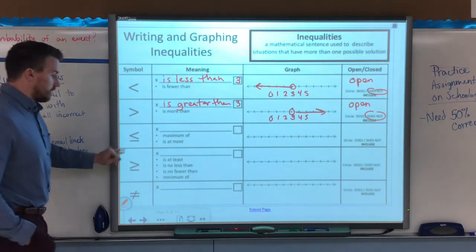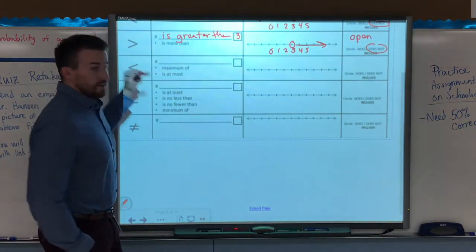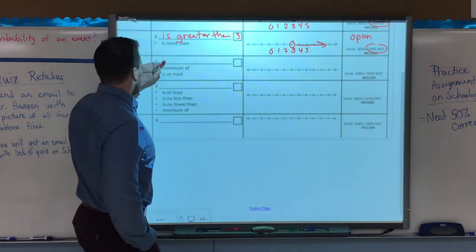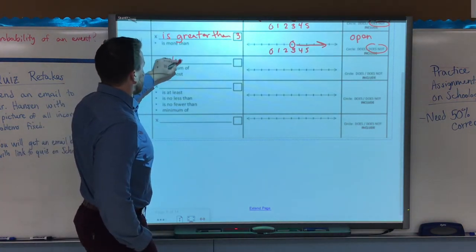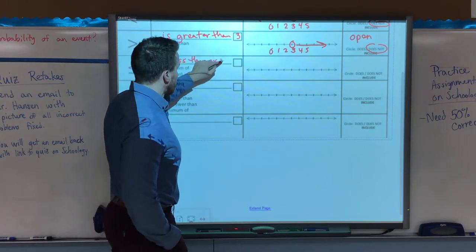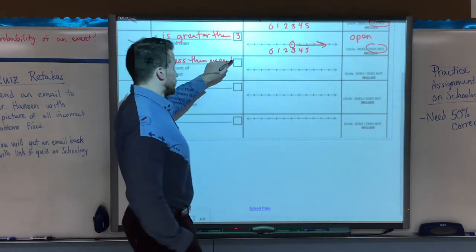Now, when we get to the less than or equal to or greater than equal to symbols, it does include that number. So that's going to look different when we graph it. So this would be written as x is less than or equal to 3. So I'm going to use 3 every time here.